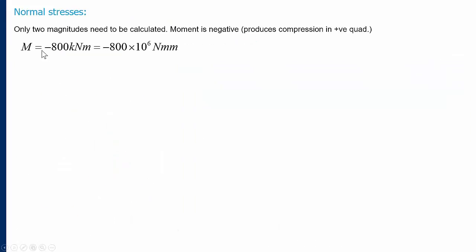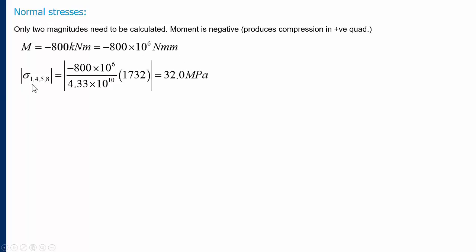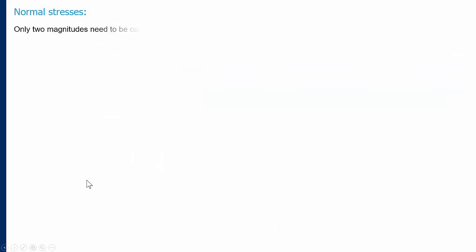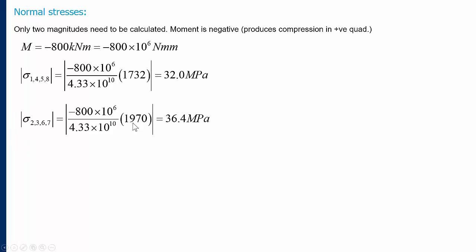For normal stresses, we only need to calculate two magnitudes since mx is constant and i is constant, leaving only y as the variable. Our moment is negative 800 kN·m, or −800 × 10⁶ N·mm. For booms 1, 4, 5, and 8 with y-magnitude 1,732 mm, we get a stress magnitude of 32 MPa. For booms 2, 3, 6, and 7 with y-magnitude 1,970 mm, we get 36.4 MPa. Because of the sign of the moment, booms 1–4 (upper half, negative y) are in tension, and booms 5–8 (lower half, positive y) are in compression.